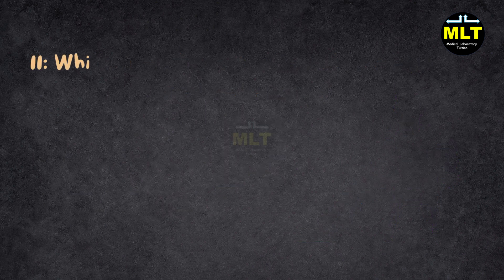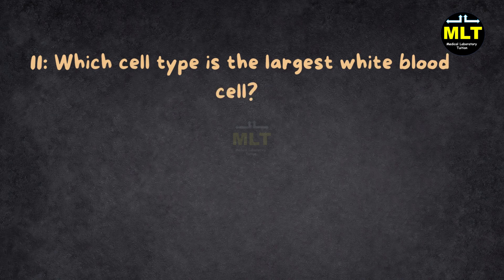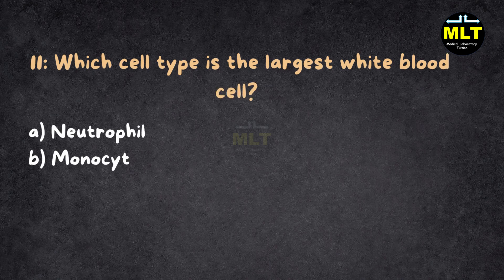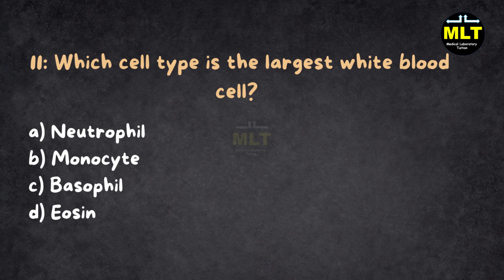MCQ 11. Which cell type is the largest white blood cell? A. Neutrophil. B. Monocyte. C. Basophil. D. Eosinophil.